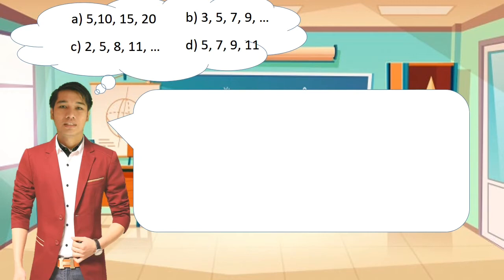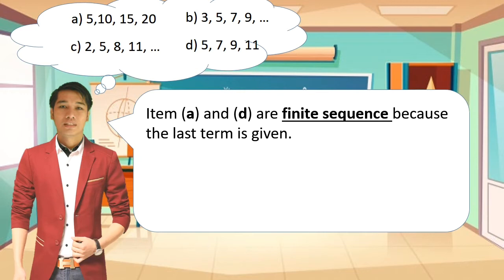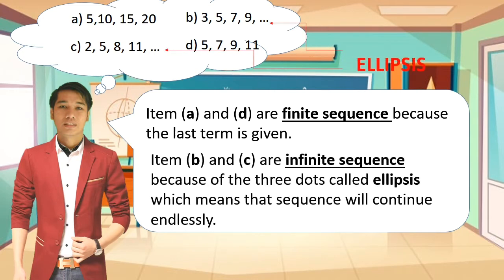Going back to our earlier examples: items a and d are finite sequences because the last term is known. Items b and c are infinite sequences because of the three dots called ellipsis, which means the sequence continues endlessly. Ang item a at d ay finite sequence sapagkat alam natin ang huling termino, samantalang ang item b at c ay infinite sequence sapagkat merong tatlong tuldok sa dulo na ang ibig sabihin ay may mga susunod pang numero hanggang sa walang hanggan.